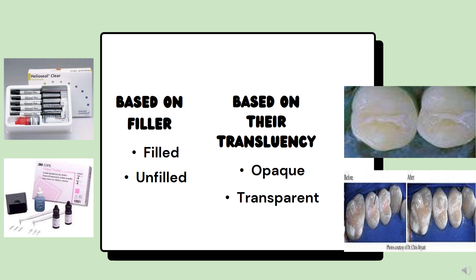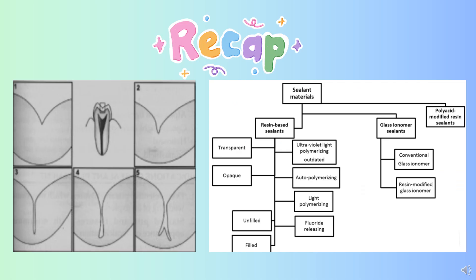Based on fillers, sealants are classified as filled and unfilled; based on translucency, as opaque and transparent. To recap: resin-based sealants include UV light polymerizing, auto-polymerizing, light polymerizing, and fluoride-releasing types; filled and semi-filled based on filler particles. Glass ionomer sealant is classified into conventional glass ionomer cement and resin glass ionomer cement. Next is polyacid-modified resin sealant. This is the main classification of pit and fissure sealant.